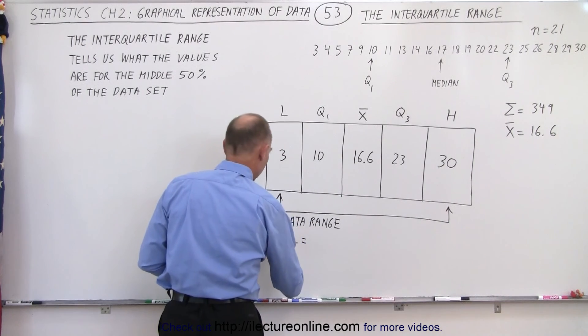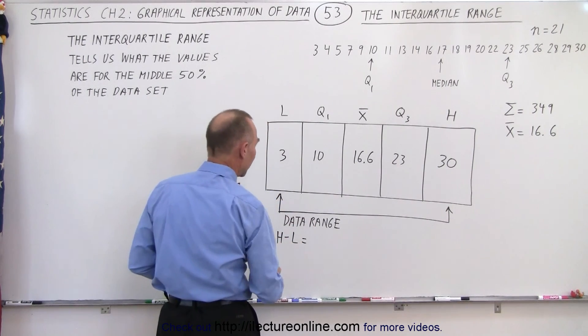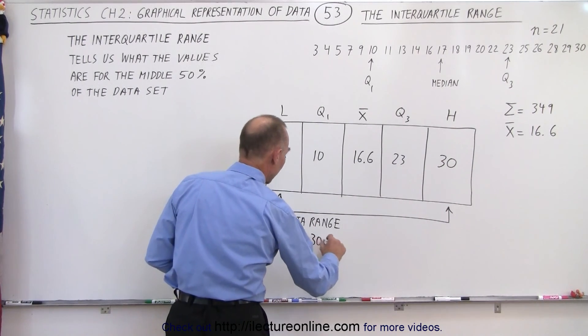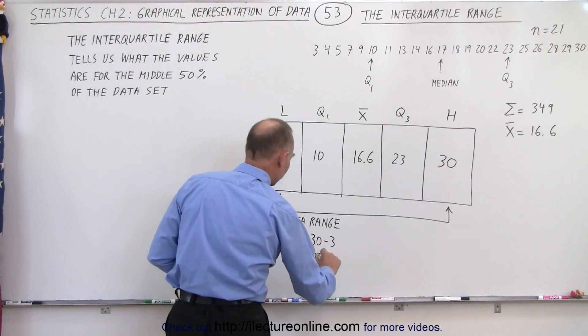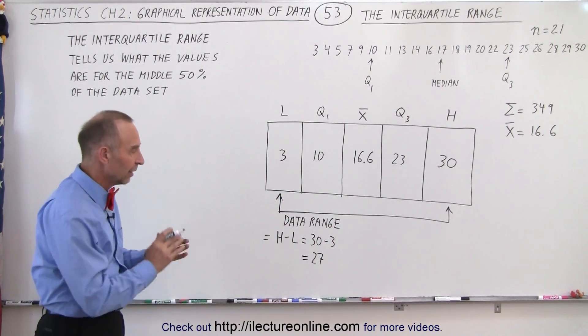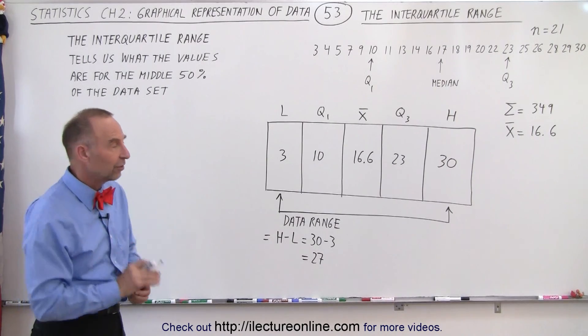That would in this case be equal to the data range, which is the high minus the low, which is 30 minus 3, which is equal to 27. So the full range of the data between the high and the low is 27.